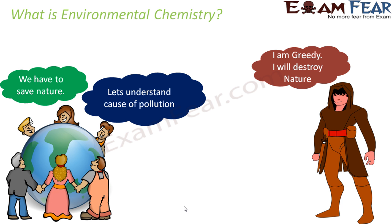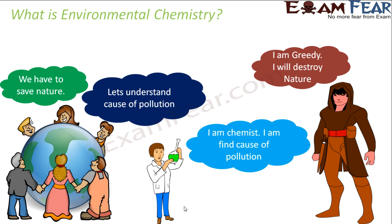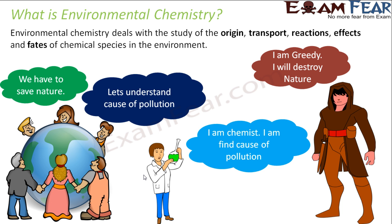The cities were choked up — the air was polluted, sound pollution, noise pollution, a lot of disease. So they decided to find the cause of pollution. Since chemical reactions are involved in air pollution, water pollution, and soil pollution, chemists were hired. The chemist said: I can find the cause of the problem. That whole study is called environmental chemistry, where we deal with the study of the origin, transport, reactions, effects, and fate of chemical species in the environment.